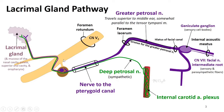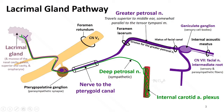The pterygoid canal leads to a space called the pterygopalatine fossa, and what sits within the pterygopalatine fossa is the pterygopalatine ganglion. This is the parasympathetic ganglion, where preganglionic parasympathetic fibers from the greater petrosal nerve will synapse with postganglionic parasympathetic fibers. The deep petrosal nerve's sympathetic fibers do pass through the ganglion but do not synapse here, because these have synapsed elsewhere — in the sympathetic trunk, in the sympathetic ganglia.